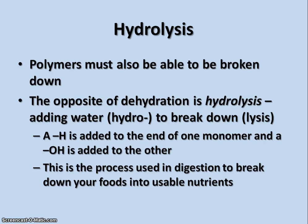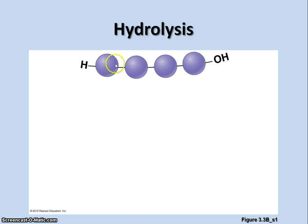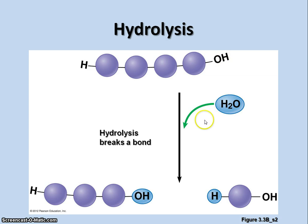It's also necessary sometimes for polymers to be broken down. This is what happens in your digestive process — you have to break down bigger molecules into smaller molecules that can then be used by cells. The opposite of dehydration is hydrolysis: you're adding water to break down something. 'Hydro' means water and 'lysis' means to break down. When hydrolysis occurs, a hydrogen is added to the end of one monomer and a hydroxyl group to the other, separating them. Here we have a polymer — if we add water, it splits into a hydroxyl group attaching to one end and hydrogen to the other, giving us two separate chains.